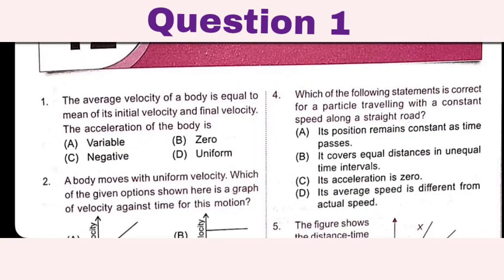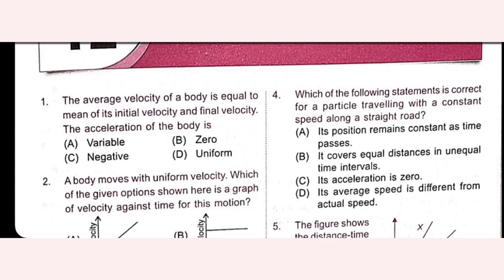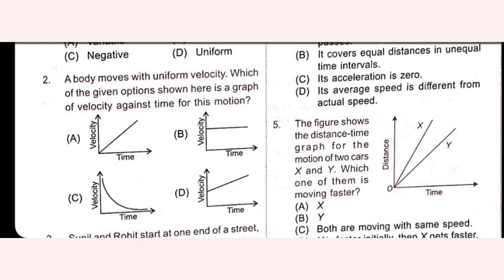The first question states that the average velocity of a body equals the mean of its initial and final velocity. We need to know that if the average velocity is equal to the mean, that means it is uniform, so the acceleration of the body is uniform. When the acceleration is uniform, the average velocity is given by (v + u) / 2, where v is final velocity and u is initial velocity.